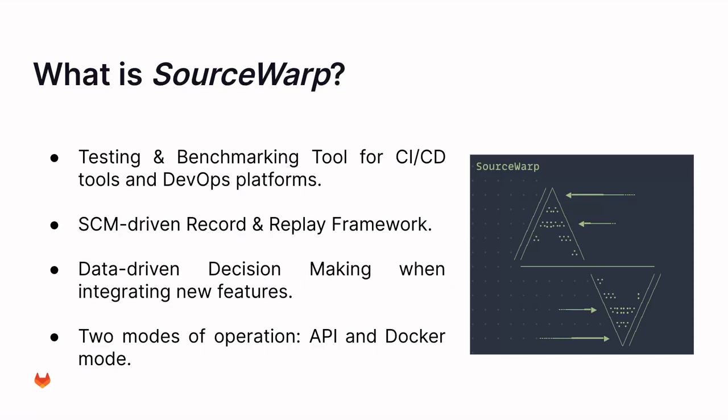Let's imagine you would like to compare two tools that implement a certain feature. You can basically set up two target systems where these two variations are running, and then use SourceWarp to replay the same slice of the git history on both systems. While you are replaying it, you can observe how these two systems behave, extract metrics, and then compare these different metrics.